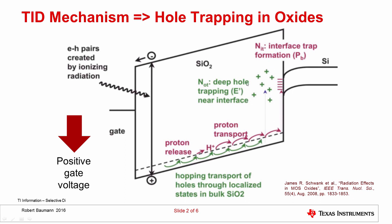The holes get trapped in so-called deep hole trapping centers near the interface — deep in the sense that they're in the middle of the band gap, somewhere between the conduction band edge and the valence band edge. There's a lot of energy required to move them from there, so any holes that end up here pretty much stay. This is basically charge trapping of holes close to the silicon, and this much positive charge close to the silicon will have significant effects, particularly for bipolar devices.